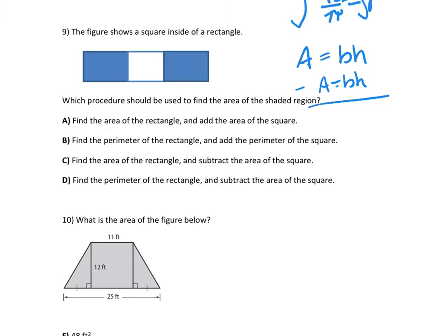So find the area, find the perimeter, find the area, find the perimeter. We're not dealing with perimeter. So find the area of the rectangle, and then add and subtract. We're looking for subtract, which is answer choice C.